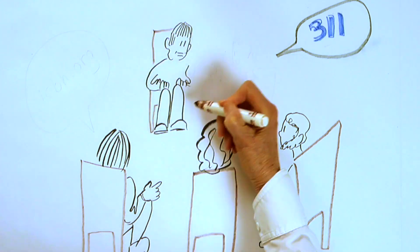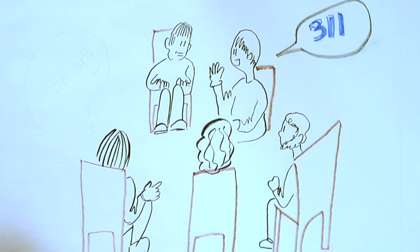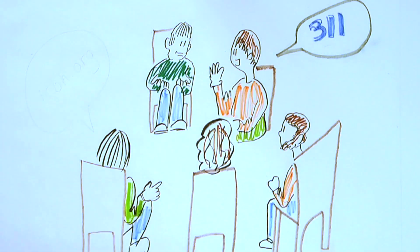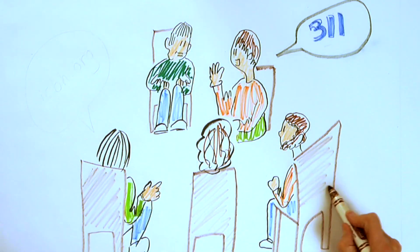Talk to neighbors. If other renters in your building are experiencing the same issue, you can reach out to the landlord as a group. You can also organize a tenant union in the building.